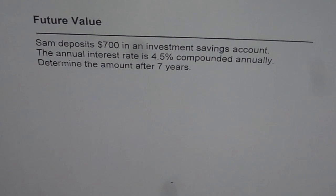Now we will see how to apply the formula for compound interest and find the future value. Sam deposits $700 in an investment savings account. The annual interest rate is 4.5% compounded annually. Determine the amount after 7 years.